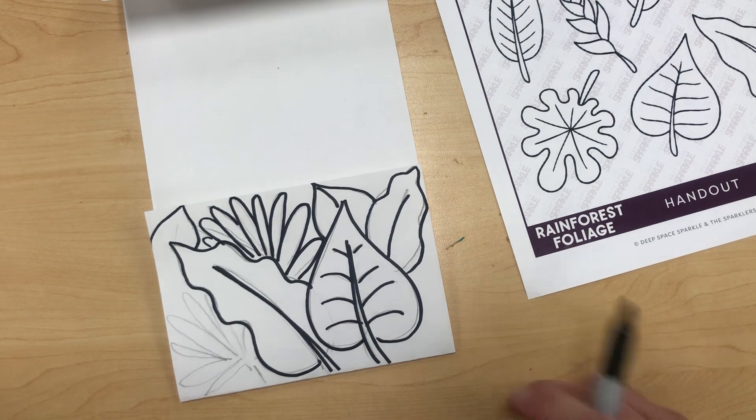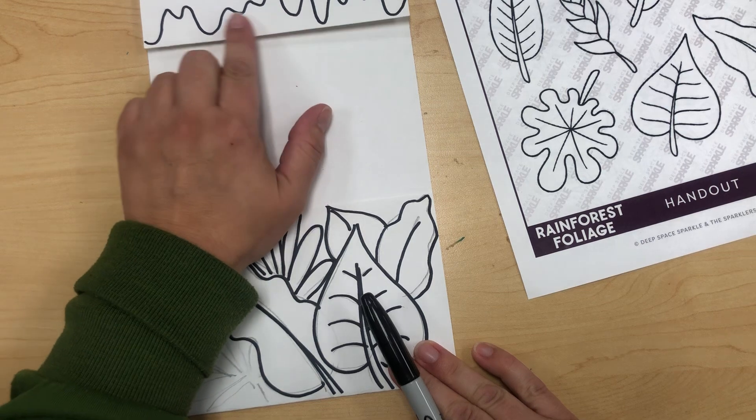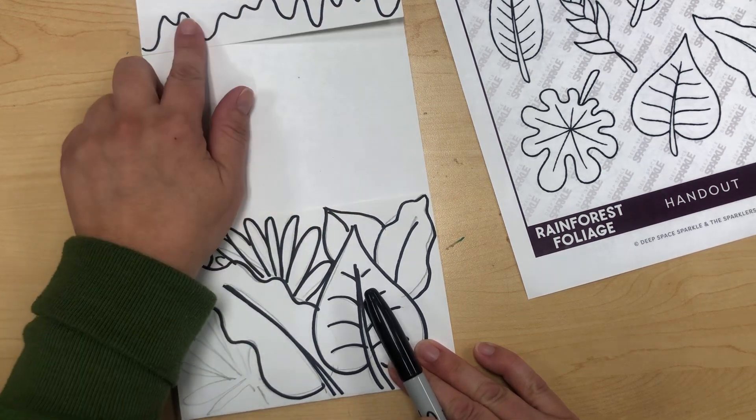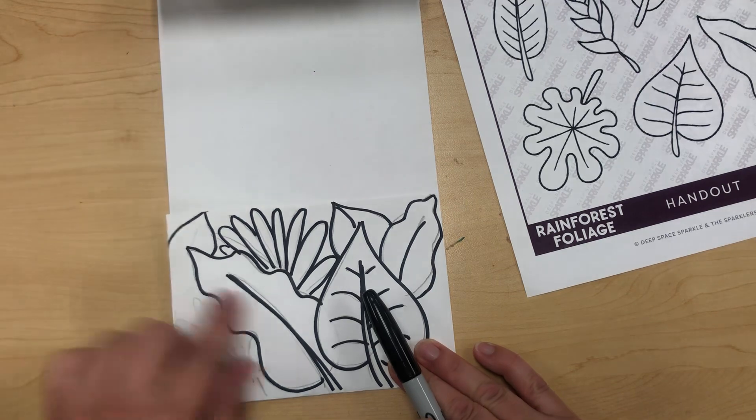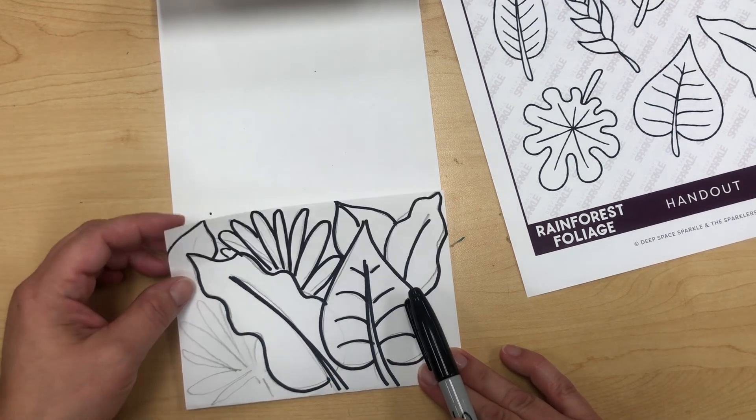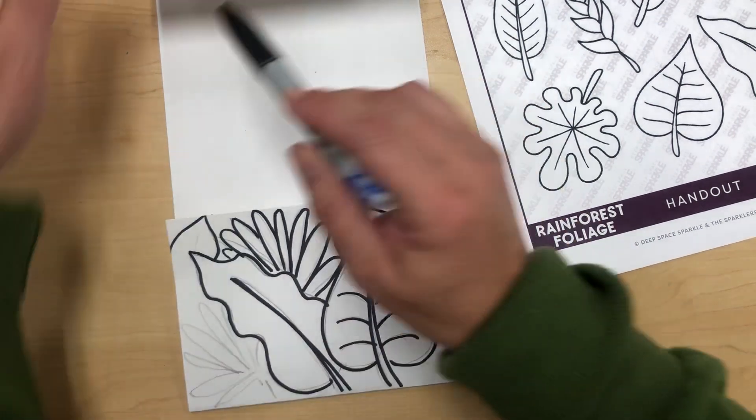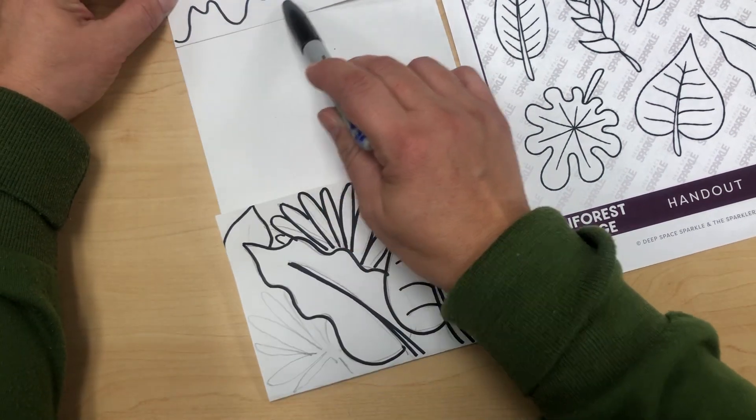So today I'm hoping that you finish drawing the emergent layer, which is this top part, the top flap. The bottom with the leaves, this is the understory. And then you should be able to cut out along this area and along that area today.